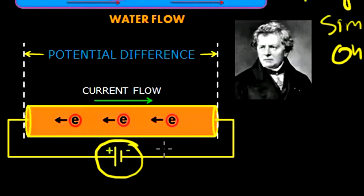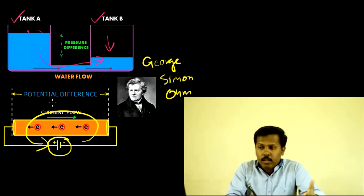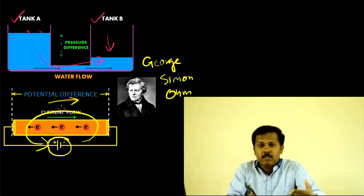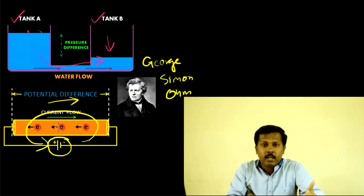The electrons flow from the negative terminal of the battery to the positive terminal through the conductor. Since conventional current flow is considered opposite to the flow of electrons, we show the current flowing in the opposite direction — that is, from the positive terminal to the negative terminal. This means if there is a potential difference across the two ends of a conductor, there will be a current flow through it.